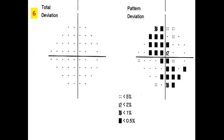Comparison of the total deviation probability plot and pattern deviation probability plot shows that the PDPP is worse than the TDPP, also known as the reverse cataract pattern. This is due to a greater number of depressed test point locations in the pattern deviation map with statistically significant loss than in the total deviation map.